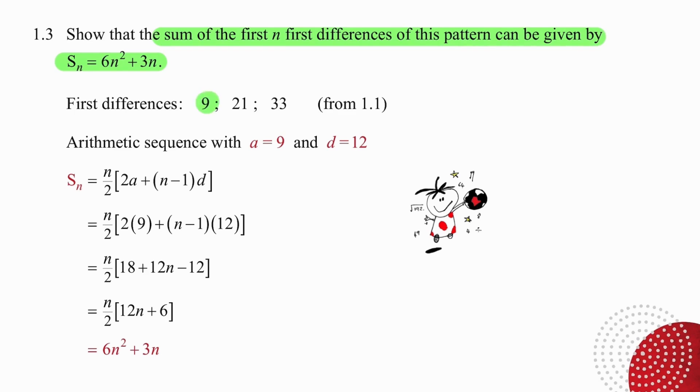We worked out in question 1.1 that the first differences were 9, 21 and 33. So we know that a is equal to 9, d is equal to 12, and we have a formula which we can take straight from the formula sheet. So substituting a equal to 9 and d equal to 12 and simplifying carefully, we end up with 6n² plus 3n, which is exactly what we are asked to do.